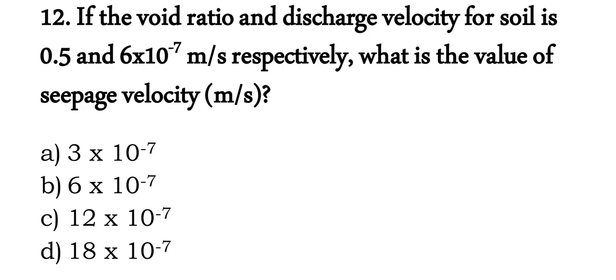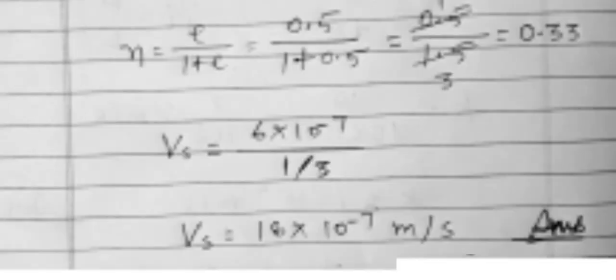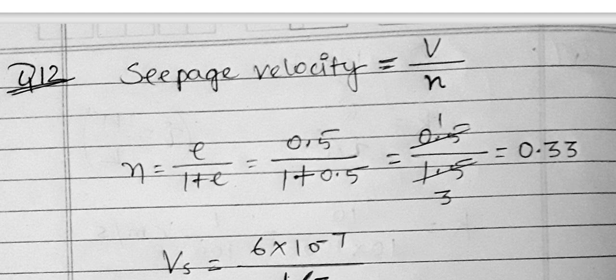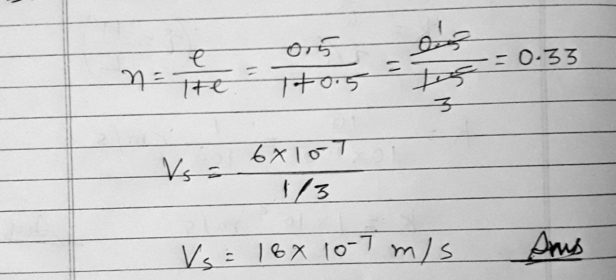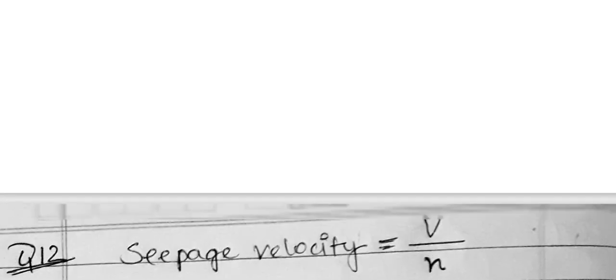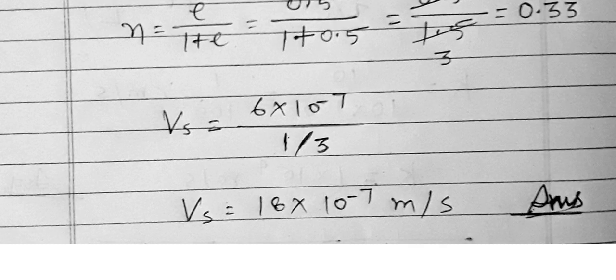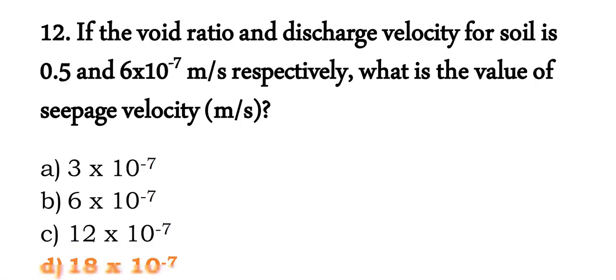Question 12: if the void ratio is 0.5 and discharge velocity is 6 × 10⁻⁷ m/s, find the seepage velocity. Seepage velocity equals discharge velocity divided by porosity. Porosity N = E / (1 + E) = 0.5 / 1.5 = 1/3 = 0.333. Seepage velocity = 6 × 10⁻⁷ / (1/3) = 18 × 10⁻⁷ m per second. Option D is correct.